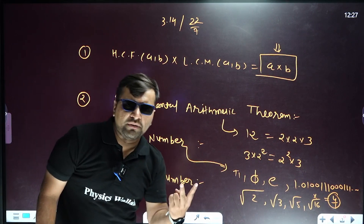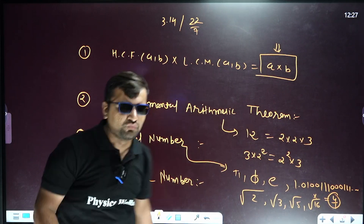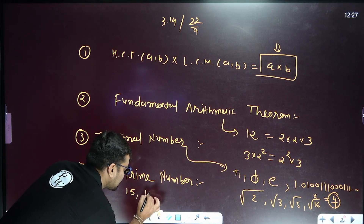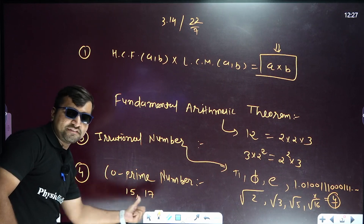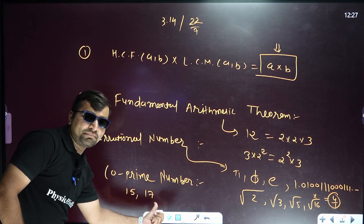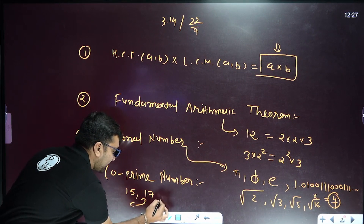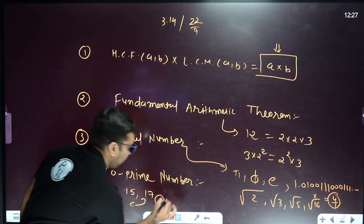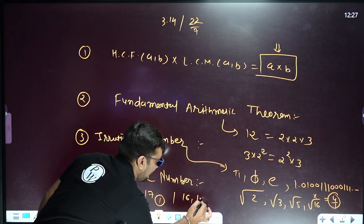Now, co-prime numbers: two numbers whose HCF equals 1. For example, 15 and 17 — one is composite, the other is prime, and their common factor is only 1. Now you have to comment: are 16 and 19 co-prime numbers? Write down in the comment section.